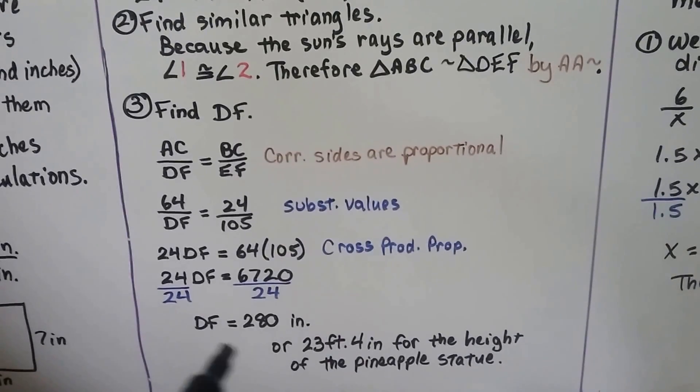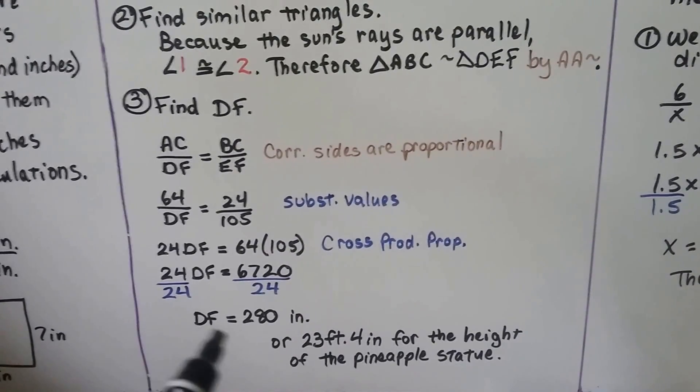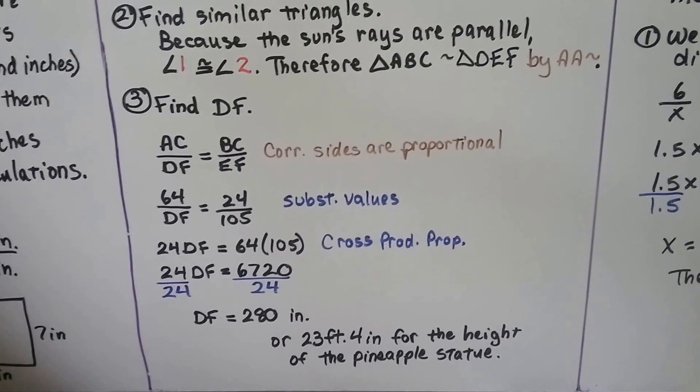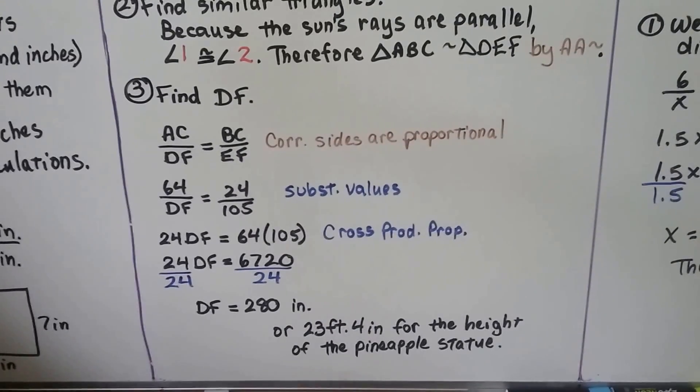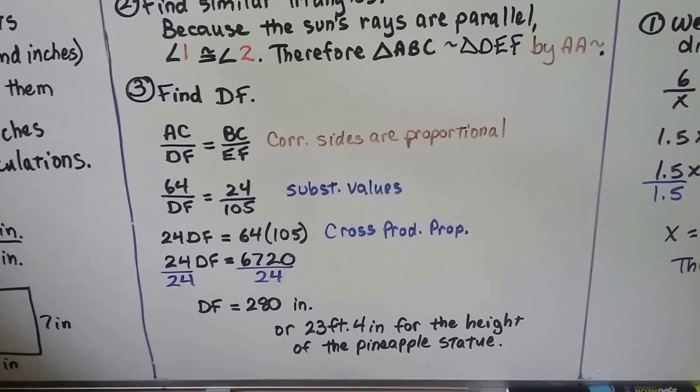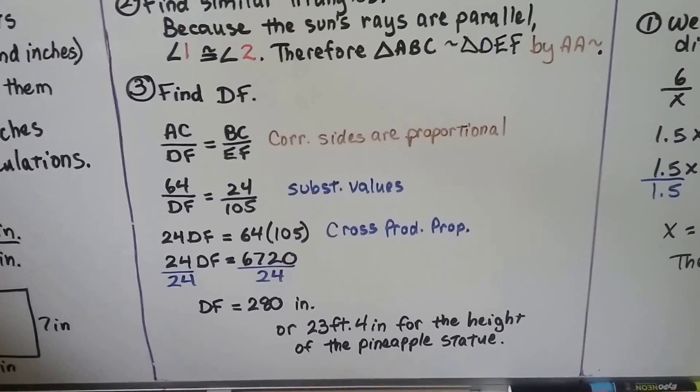We divide both sides by the 24 and we find out the height of the pineapple, DF, is 280 inches. We can divide that by the 12 for 12 inches in a foot and find that it's 23 feet 4 inches for the height of the pineapple statue.